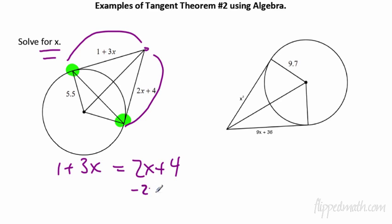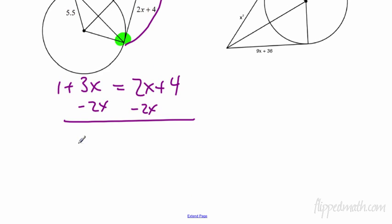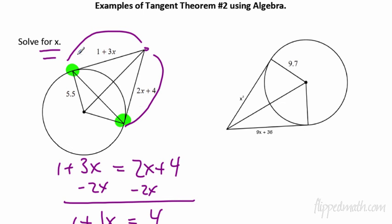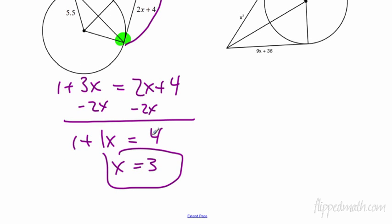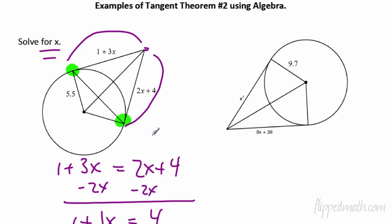Now what? Subtract 2X from each side. There it is. 1 plus 1X equals 4. Subtract 1 from each side. X equals 3. Done. Make sure they don't ask you for the tangent, do they? No, solve for X. So we got X equals 3 for that one. We're all done. How about the next example? Oh by the way, we didn't use that number. They're going to throw extra numbers at you. And we're not going to use this number.